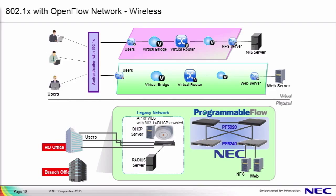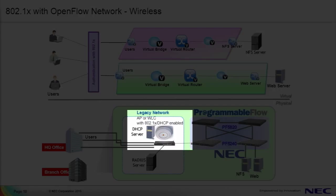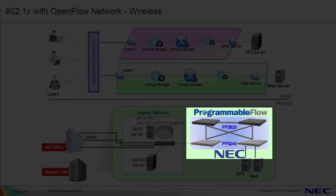In this slide, we're showing the mapping of virtual networks to the physical topology. Starting with the physical topology below, users connect to a wireless access point, which acts as a thin client forwarding all traffic to the wireless LAN controller or WLC. The WLC in this scenario is both the DHCP server and 802.1X authenticator. The RADIUS server homes to the traditional network switch, which has an uplink configured as a trunk port to the programmable flow slash OpenFlow network.